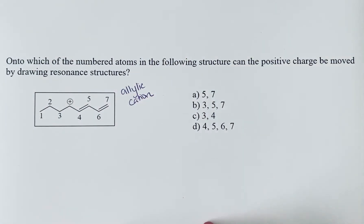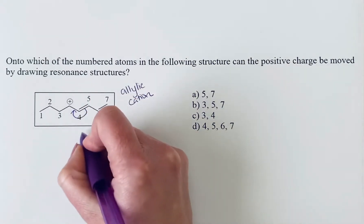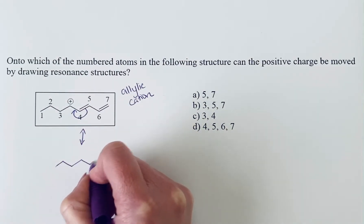And what we can do is we can move the pi bond towards that cation. So when we make that first shift, we will get the following structure.